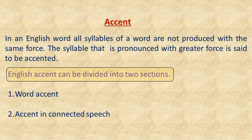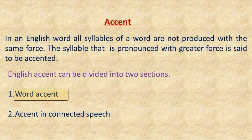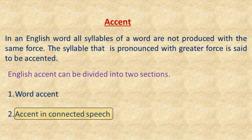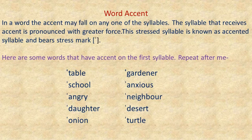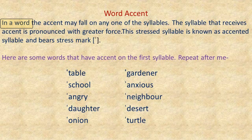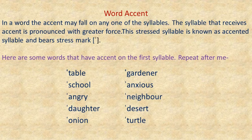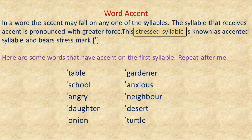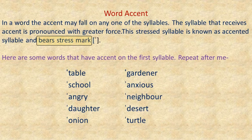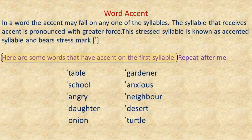English accent can be divided into two sections: word accent and accent in connected speech. In word accent, the accent may fall on any one of the syllables. The syllable that receives accent is pronounced with greater force — this stressed syllable is known as the accented syllable and bears a stress mark. Here are some words that have accent on the first syllable. Repeat after me.